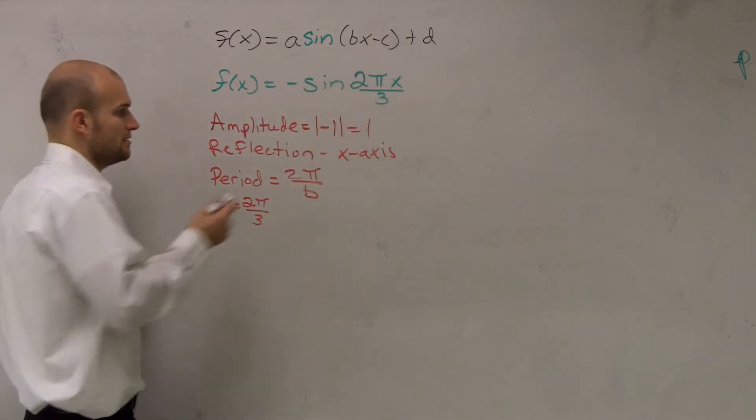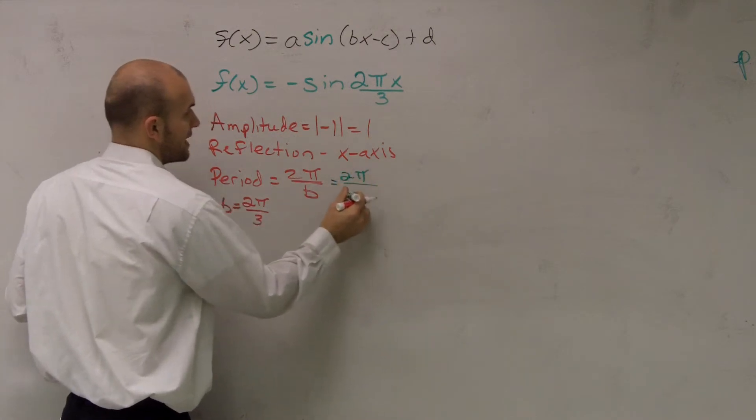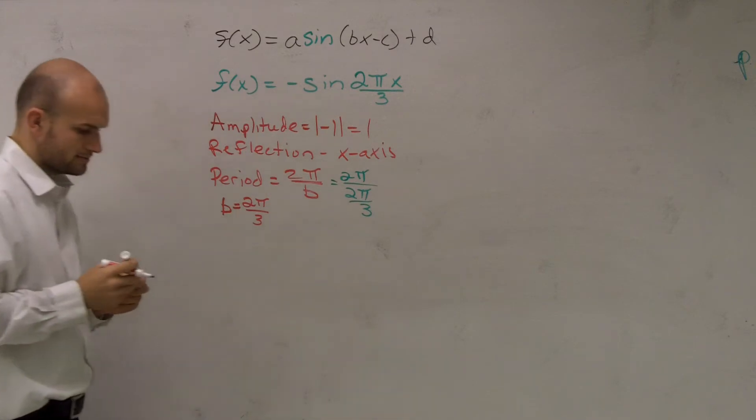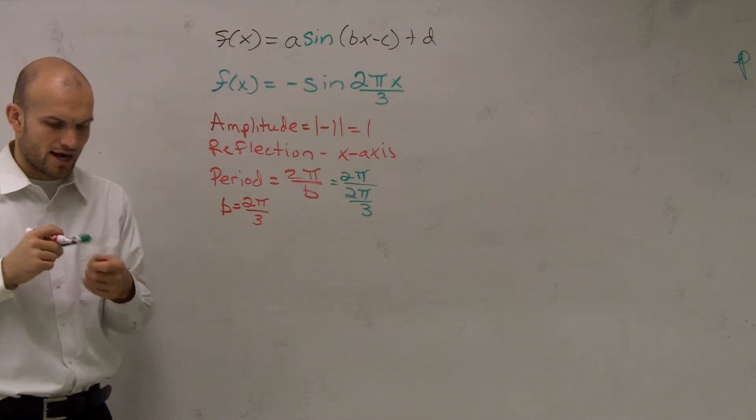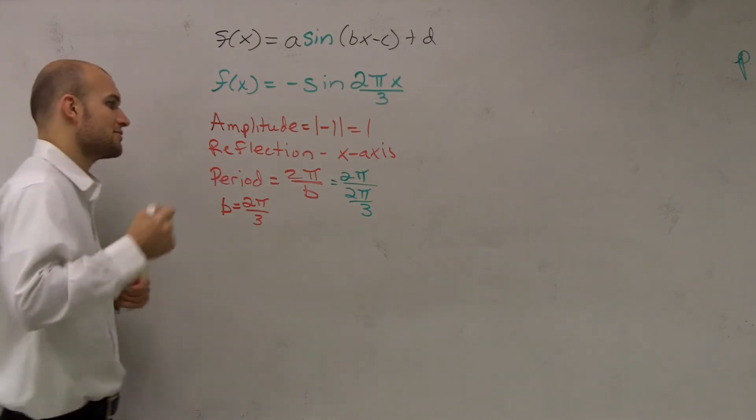But now, when you plug it in, so you get 2 pi divided by 2 pi over 3. So then we're like, alright, well, how do we get rid of a fraction on the bottom of a fraction? We multiply by the reciprocal.